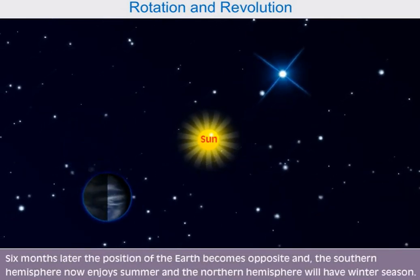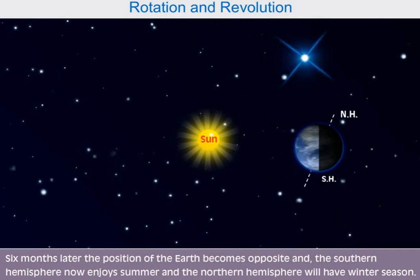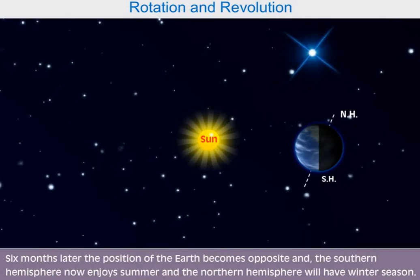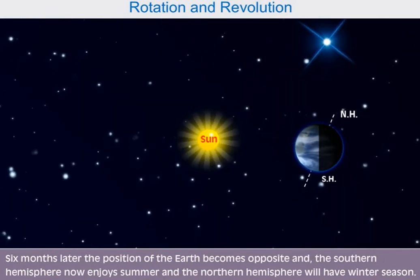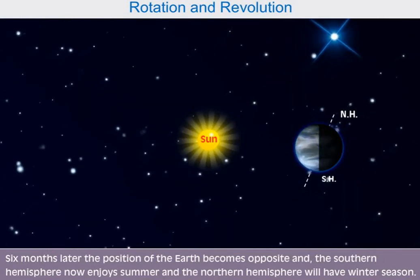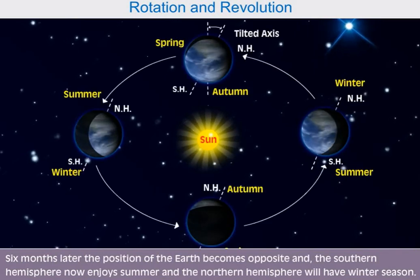Six months later, the position of the Earth becomes opposite, and the Southern Hemisphere now enjoys summer, and the Northern Hemisphere will have winter season.